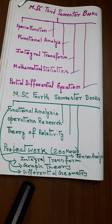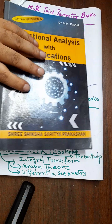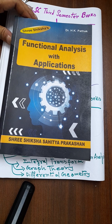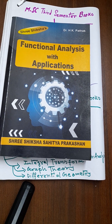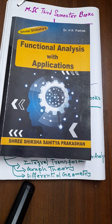Functional Analysis will be another subject in your third semester — a 100-mark paper. The best book for Functional Analysis, in my opinion, is 'Functional Analysis with Applications' by Dr. H.K. Potter. Even in my MSc examination I scored 79 in Functional Analysis using this book. You can consider this as one of the best books for MSc Mathematics for Functional Analysis.